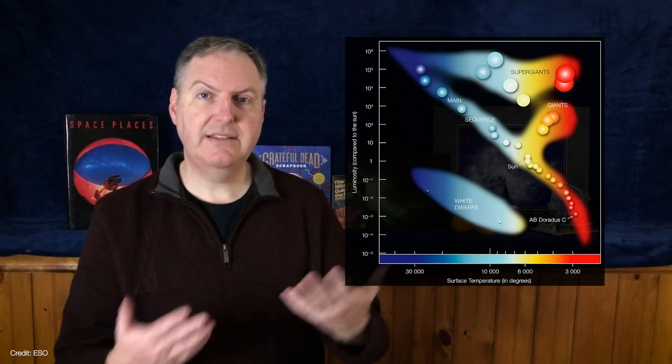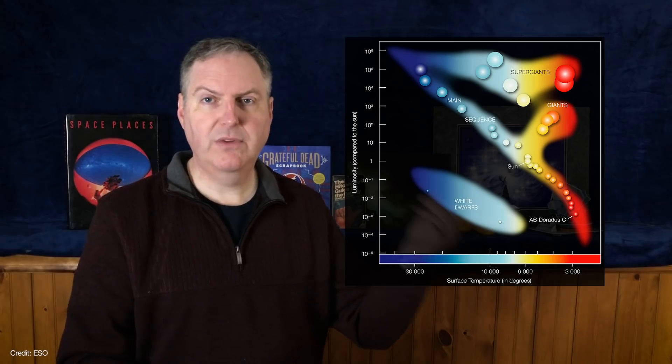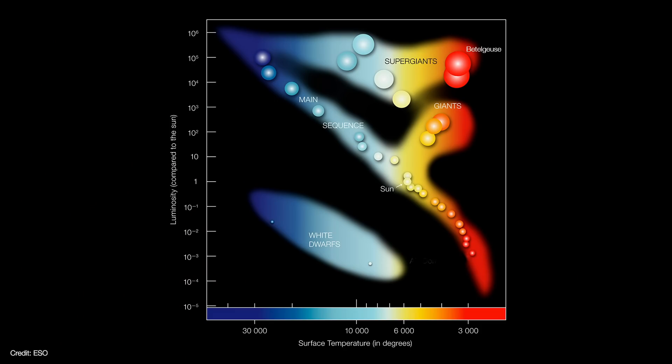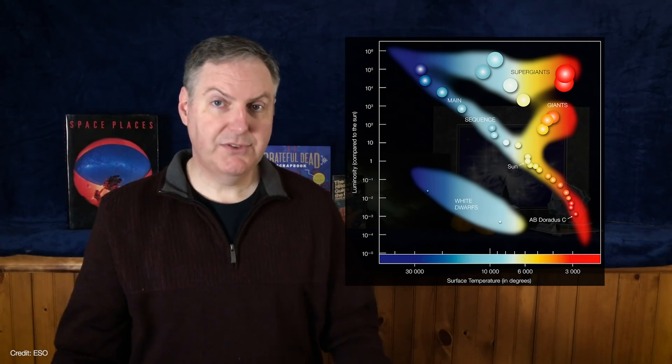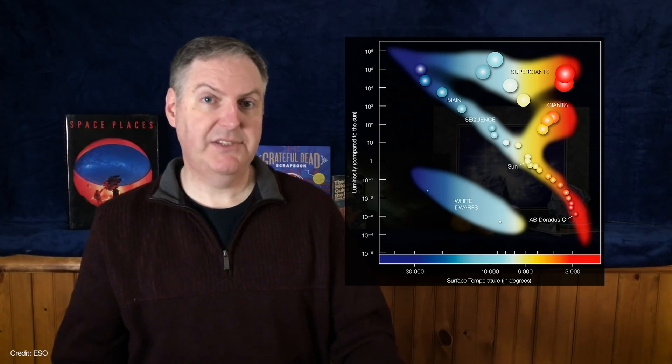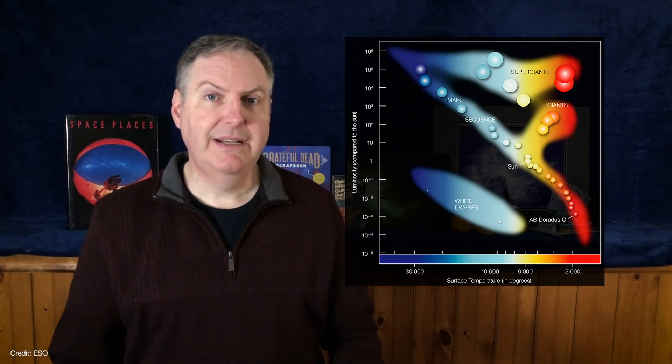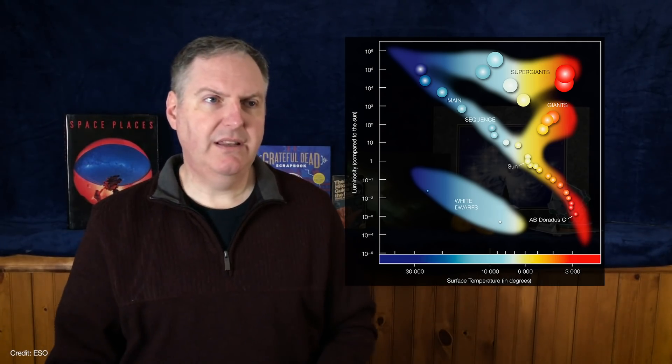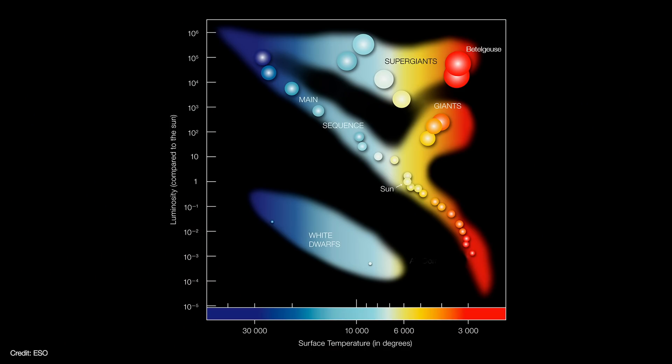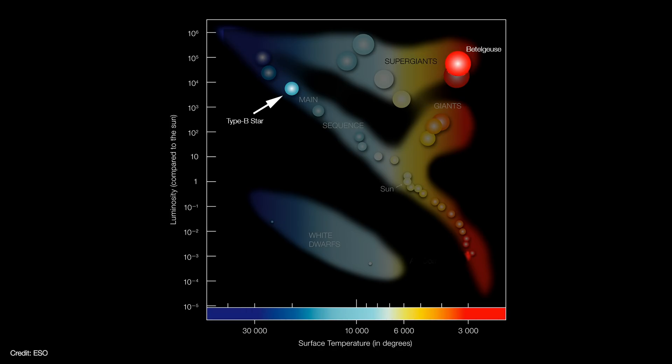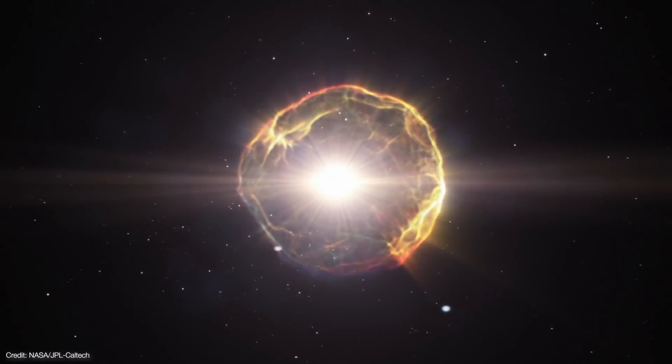So instead, we estimate its mass by measuring its luminosity and temperature and plotting that on the Hertzsprung-Russell diagram. We can then compare its properties to similar stars whose masses we already know. Now, there are loads of uncertainties in these luminosity and temperature measurements. I mean, we are dealing with a pulsating boiling star after all, but most estimates put Betelgeuse in the 15 to 20 solar mass range. So while that's not super accurate, it's enough to tell us that Betelgeuse probably started out life as a B-type star, and when it finally does go supernova, it will likely leave behind a neutron star.